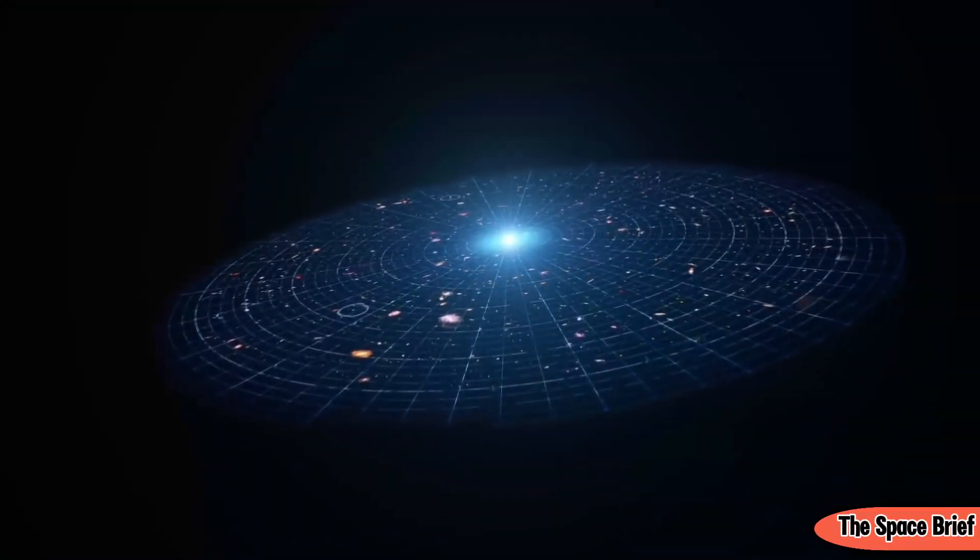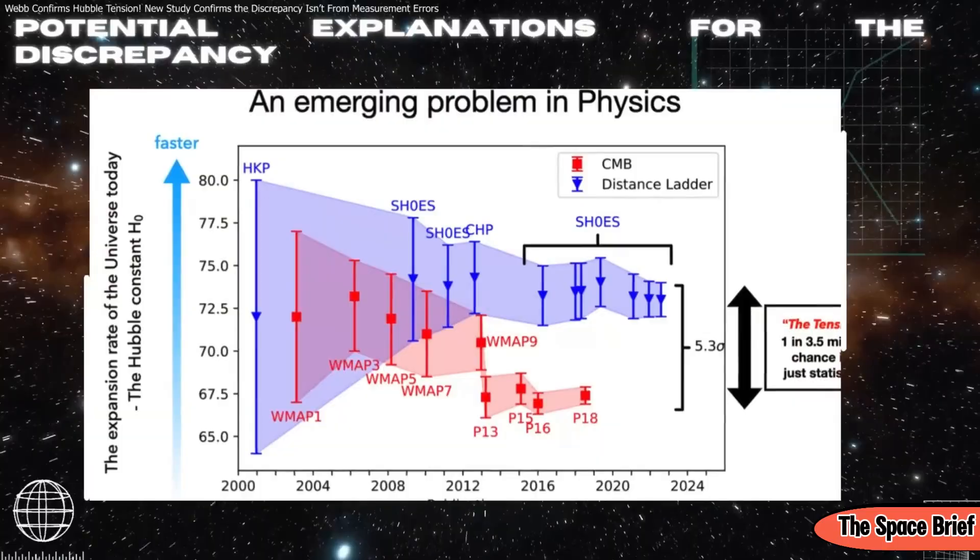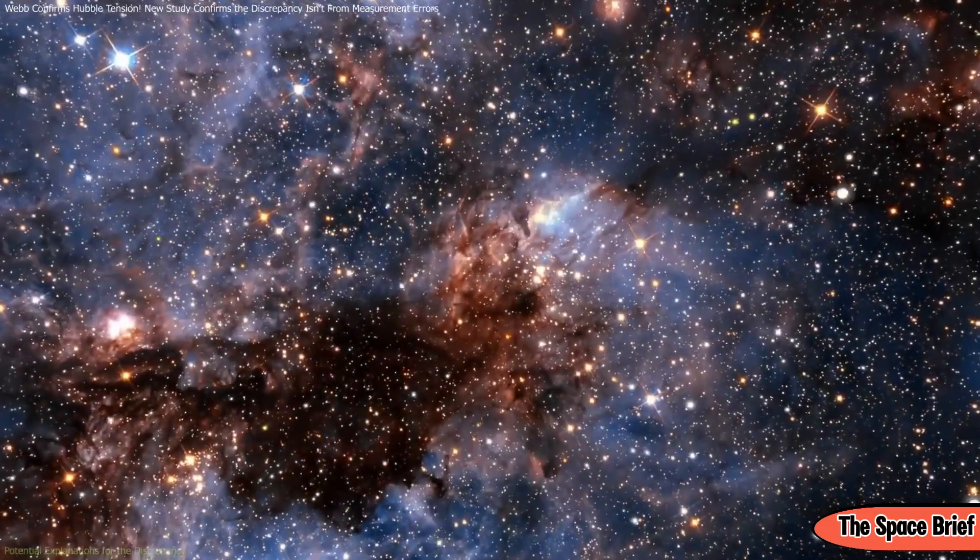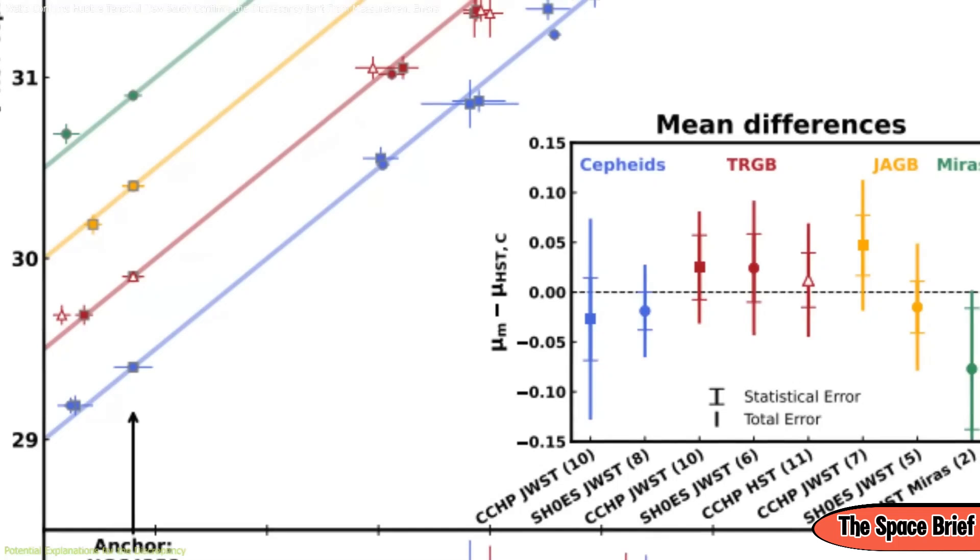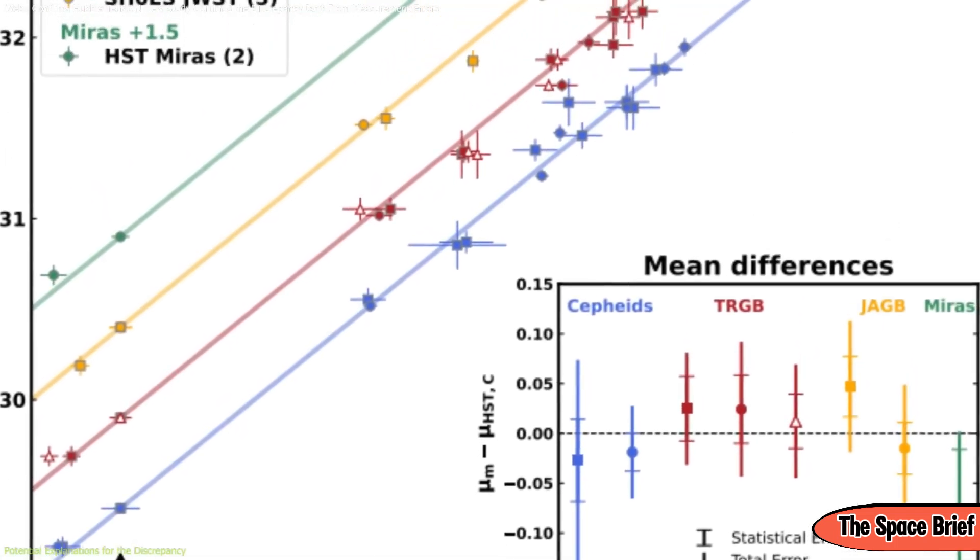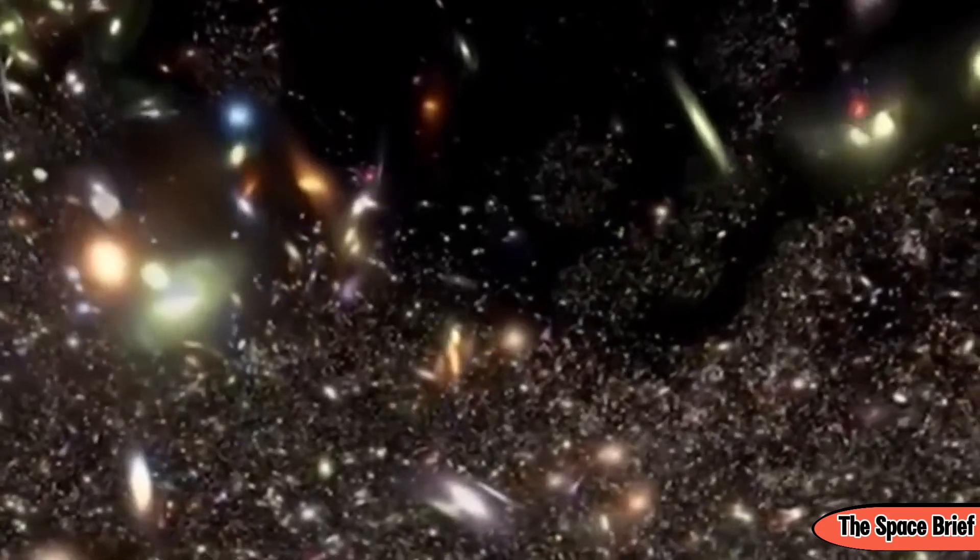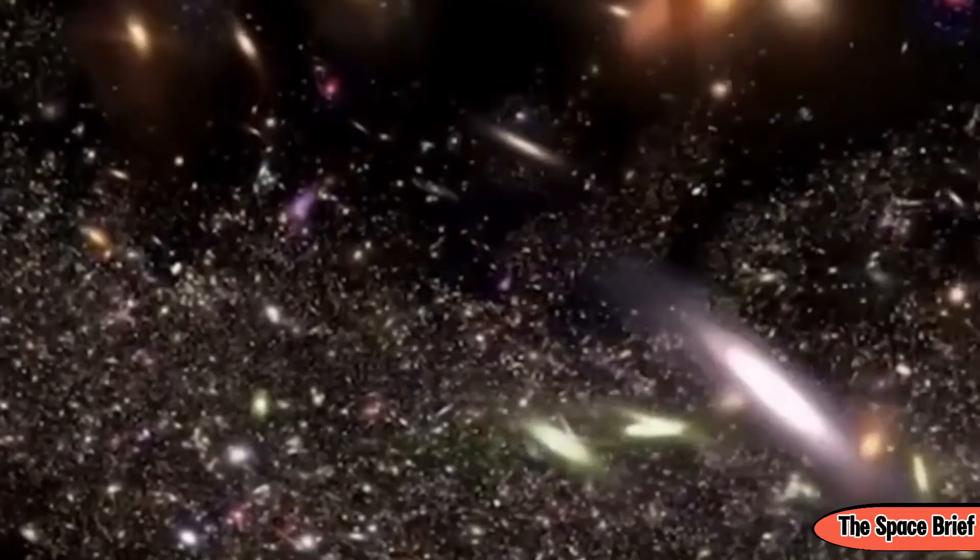The team's research using Webb covered about a third of the full sample of galaxies observed by Hubble, using the galaxy Messier 106 (M106), also known as NGC 4258, located around 23 million light-years away in the constellation Canes Venatici, as a reference point.